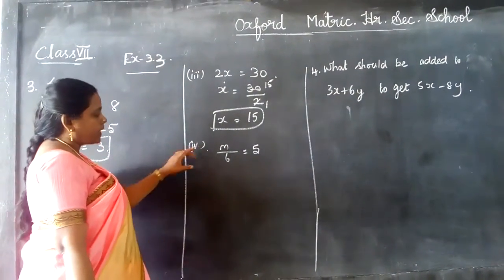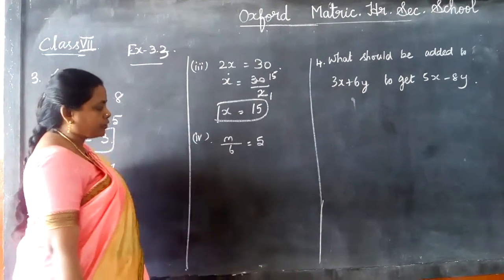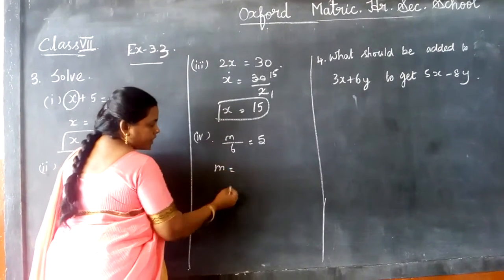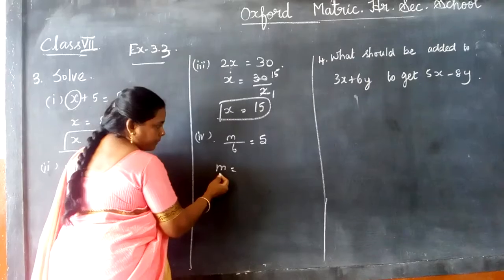Now the fourth question, m by 6 equals 5. So what we have to find, we have to find the value of m. So we have to just cross multiply this.